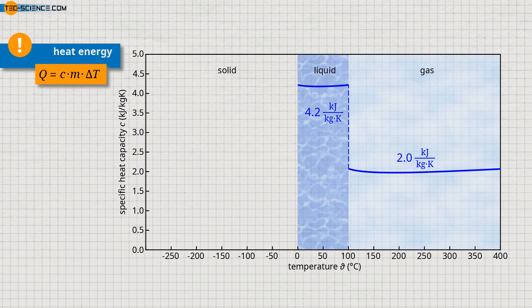However, the situation is different for frozen water. In this case, the specific heat capacity changes very strongly with the temperature. For low temperatures, the specific heat capacity decreases more and more and is even zero at absolute zero. Such behavior does not only show water but every substance — for any substance, the specific heat capacity becomes zero as absolute zero is approached.